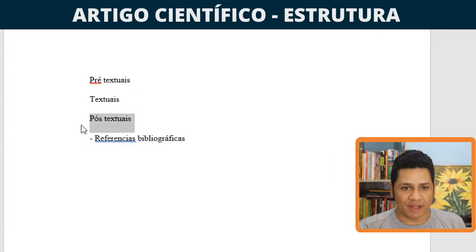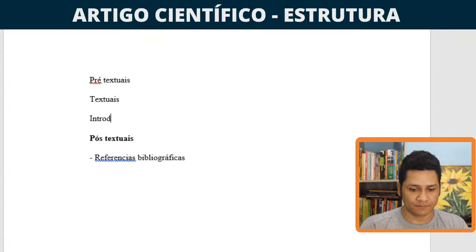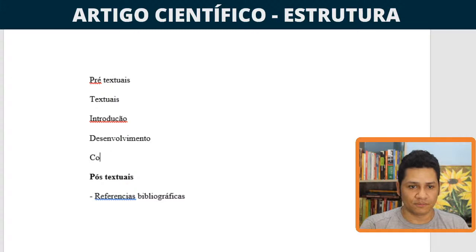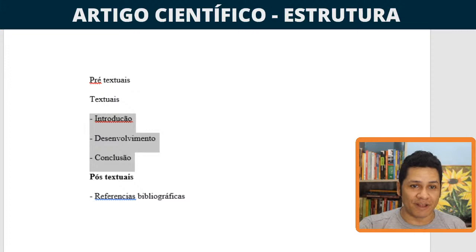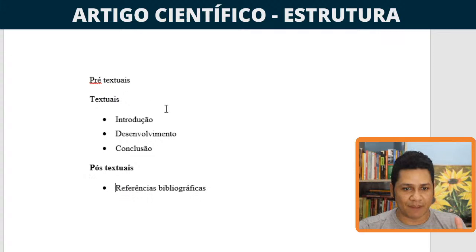Os elementos textuais são: introdução, desenvolvimento e conclusão. Esses são os elementos que eles exigem. Quanto à organização e disposição desses elementos, isso fica a critério mesmo do publicador, da forma que você vai dar ao seu artigo científico. Os elementos pré-textuais precisam ter título, autoria, créditos, resumo, palavras-chave, abstract e keywords.